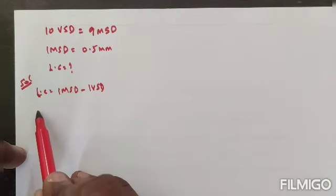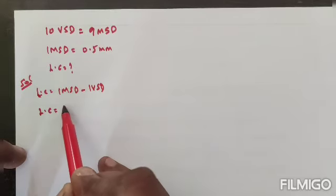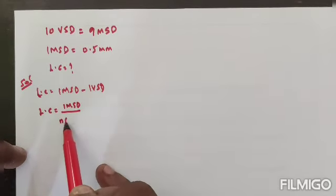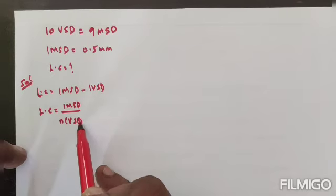You know one more formula: least count is equal to one MSD value divided by number of vernier scale divisions.